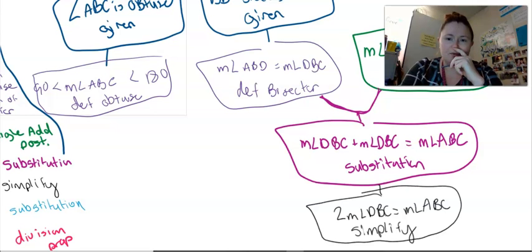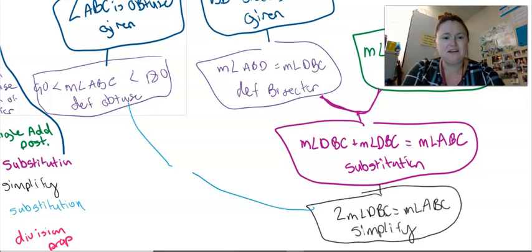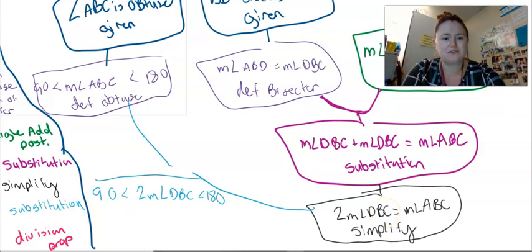So now I should probably put some pieces of information together. I've got over here that the measure of angle ABC has to be less than 180 and twice DBC equals ABC. So I'm going to substitute again. I'm going to take this piece of information and this piece of information to say that two times the measure of angle DBC has to be more than 90, but it also has to be less than 180, which is really the part I'm going to use. And we just use substitution to get that.